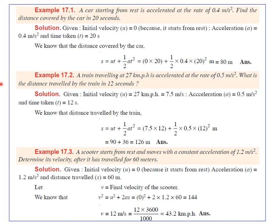Problem 1: A car starts from rest and is accelerated at 0.4 m/s². Find the distance covered in 20 seconds. Since it starts from rest, u = 0; acceleration a = 0.4 m/s²; time t = 20 s. Using s = ut + ½at², substituting all values, we get s = 80 meters.